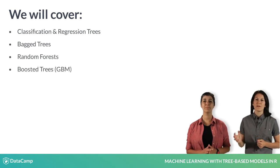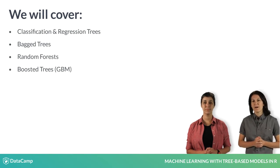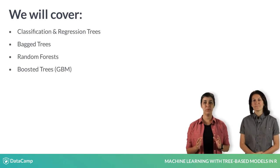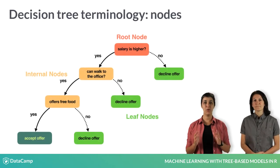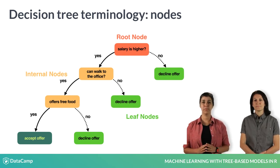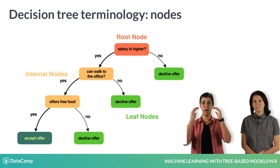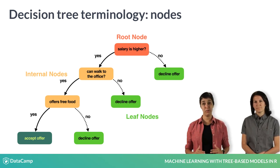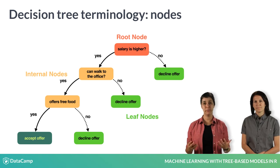Lastly, you'll learn about boosted trees — in particular, the gradient boosting machine, or GBM, one of the most widely used and powerful algorithms available today. A decision tree is a hierarchical structure with nodes and directed edges. The node at the top is called the root node.